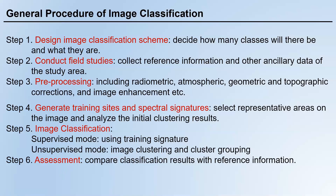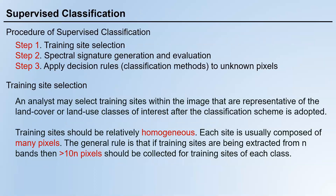If NLCD says a pixel is vegetation and your classification agrees, you're doing a good job because NLCD is considered the ground truth. If NLCD says a pixel is vegetation but your classification says bare soil, something is wrong with your classification method. This is a qualitative assessment method; quantitative methods for accuracy assessment will be introduced later.